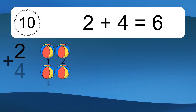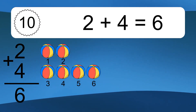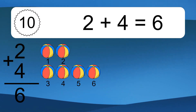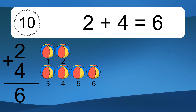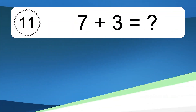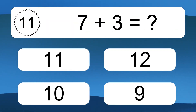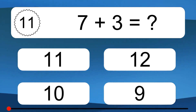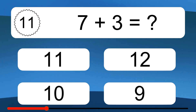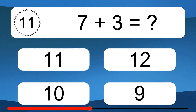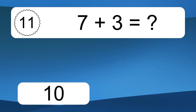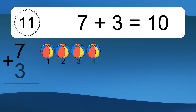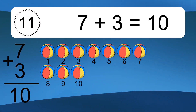2 plus 4 equals what? 2 plus 4 equals 6. Let's count it. 1, 2, 3, 4, 5, 6.